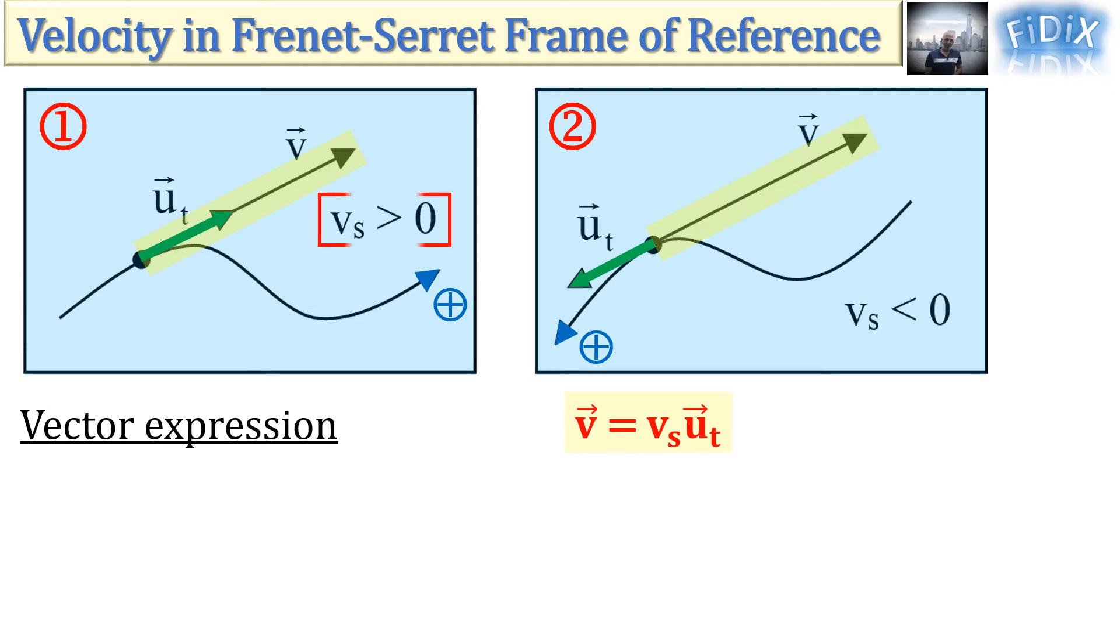In figure 1, v_s is positive since vectors v and u_t have the same direction, whereas in figure 2, v_s is negative since these vectors have opposite directions. The magnitude v of the velocity, also called speed, is the absolute value of v_s.